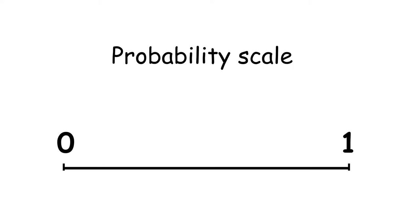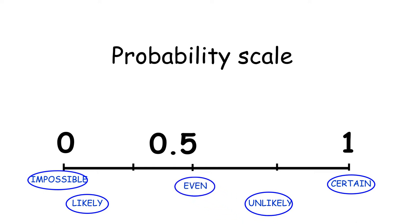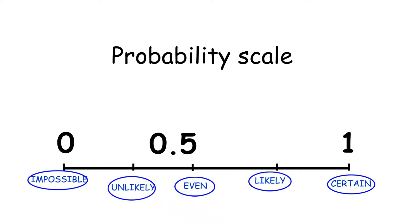We're going to start with the probability scale. All of our probabilities are between 0 and 1, with 0.5 about halfway. We have words which describe each area on this scale: a probability of 0 is impossible, a probability of 1 is certain, 0.5 is even, between 0.5 and 1 is likely, and between 0 and 0.5 is unlikely. These are five really important words.